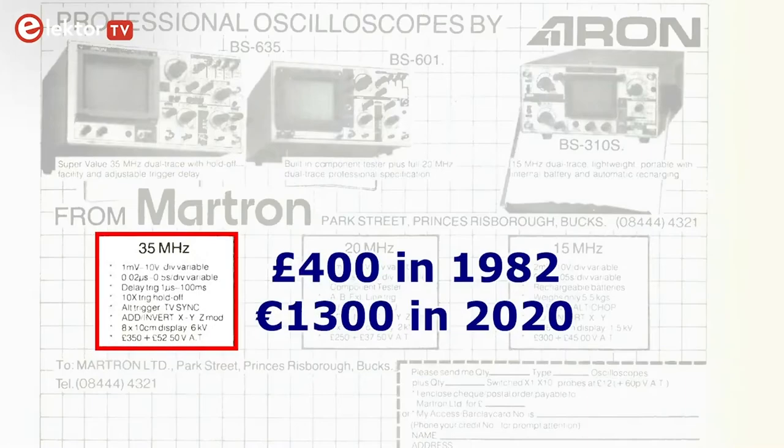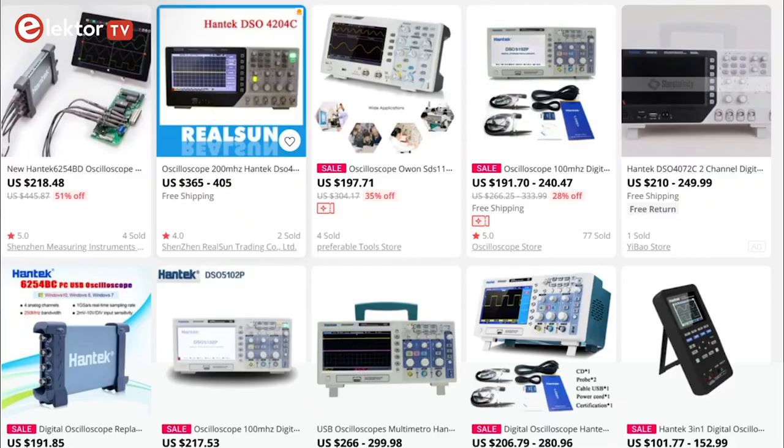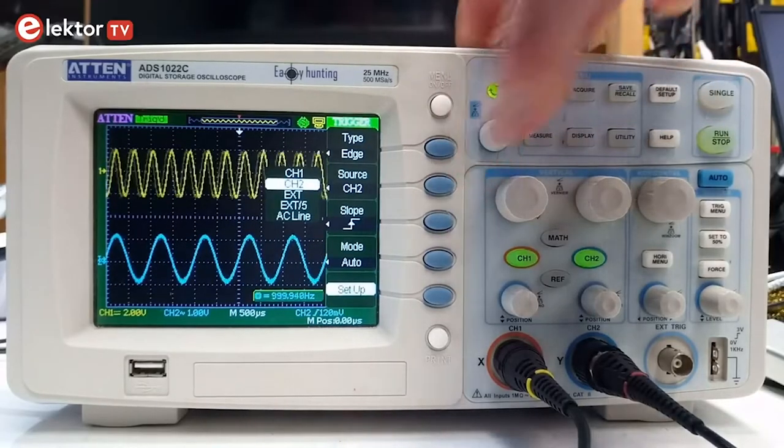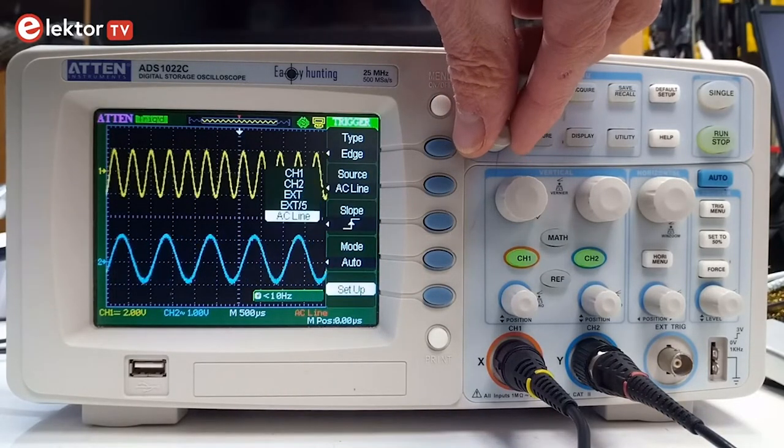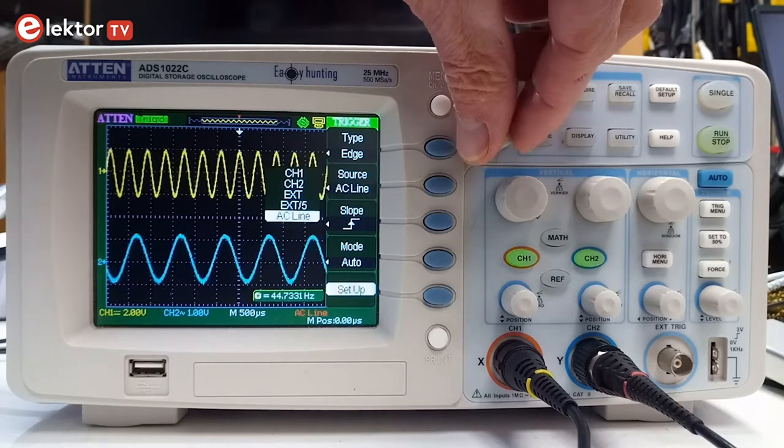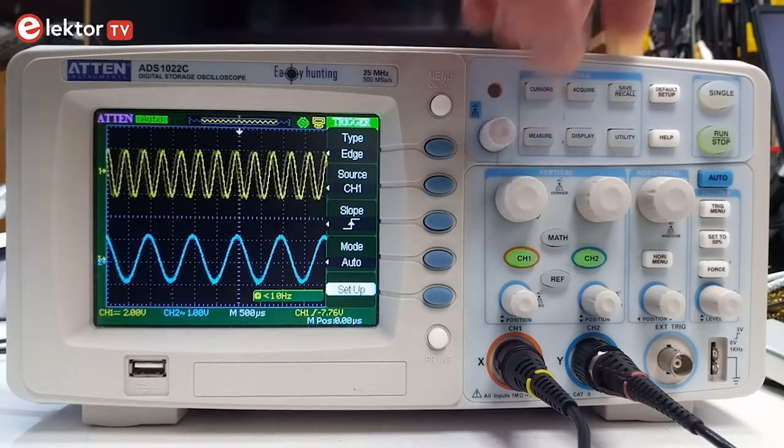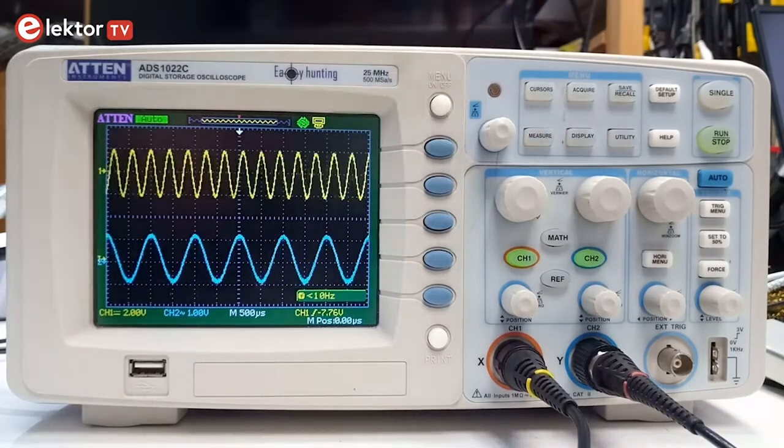Oscilloscopes used to be expensive, but today prices have dropped so much that almost anyone can afford one. Already many years ago I bought this one online for around 100 euros and it has always worked great for me. For most hobbyist tinker-maker applications, a basic oscilloscope is more than good enough.